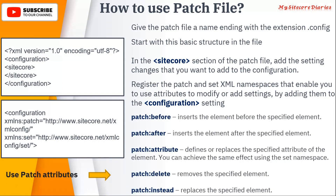For patching, you use patch attributes. patch:before is used to insert an element before the specified element. patch:after inserts after that element. patch:attribute is used to define or replace a specified attribute of an element — you can use 'set' to achieve the same effect. If you want to update an attribute value of a node, use patch:attribute. patch:delete simply removes that element. patch:instead replaces the specified element.